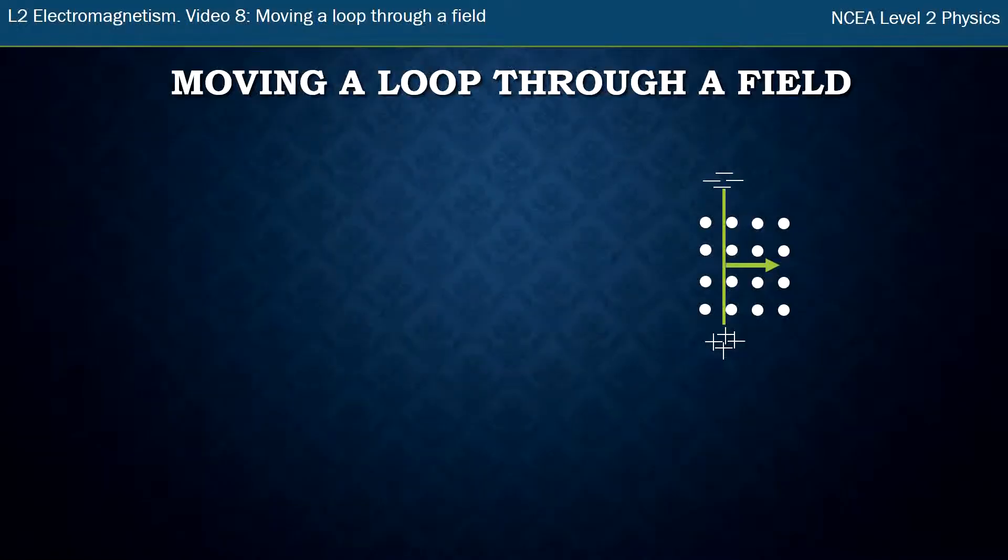Hi, this is Mr McGovern. This is the eighth video in the Level 2 Electromagnetism series where we're looking at moving an entire loop of wire through a field.